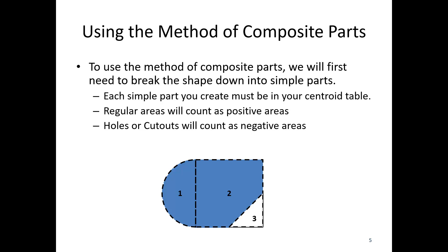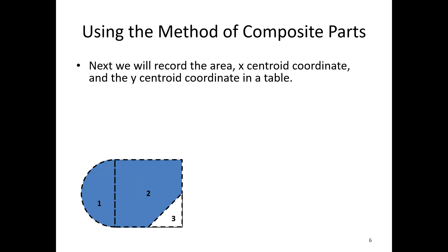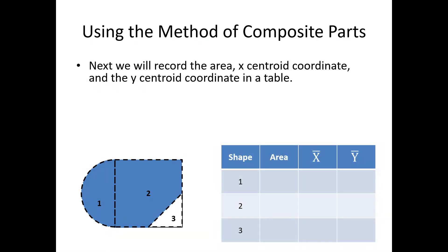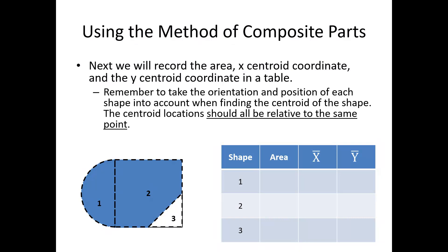After dividing into pieces, we create a table. We need the area of each shape — the area of the semicircle, area of the rectangle, and negative area of the triangle — plus the x bar and y bar location for each. These are not just raw values from the table; they need to be x bar and y bar values for that piece relative to a single origin point. Let's put our origin point over here and figure out x bar and y bar from there.